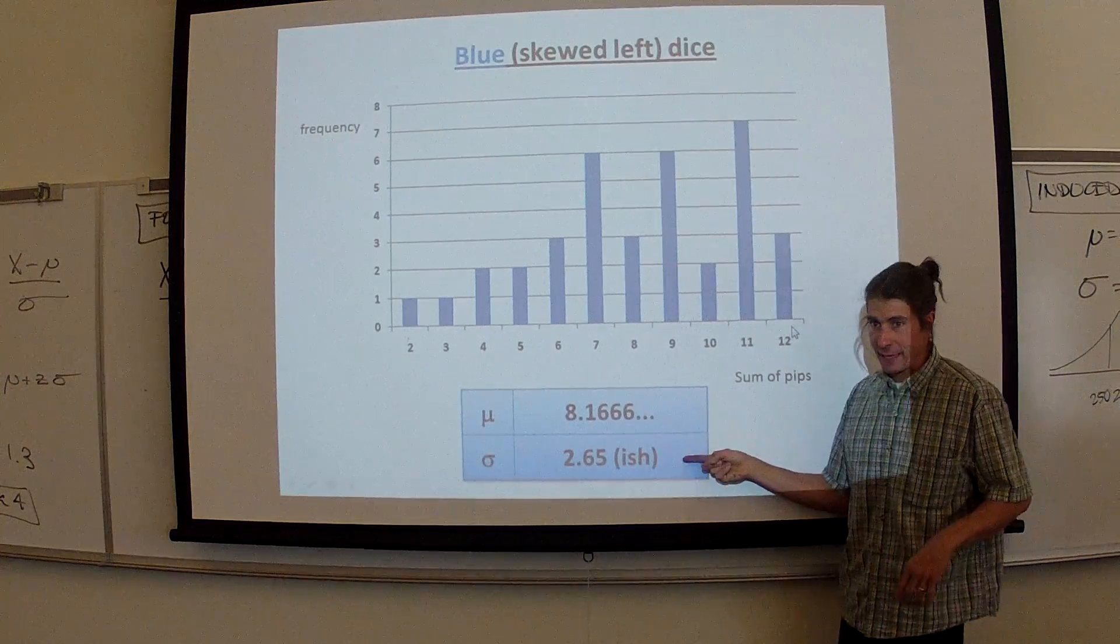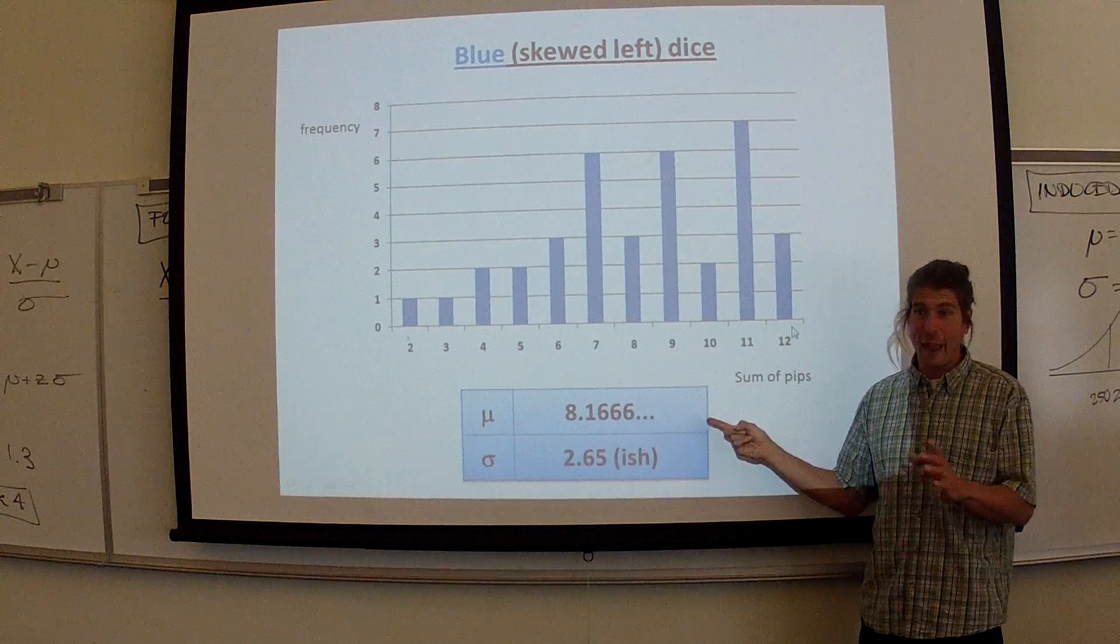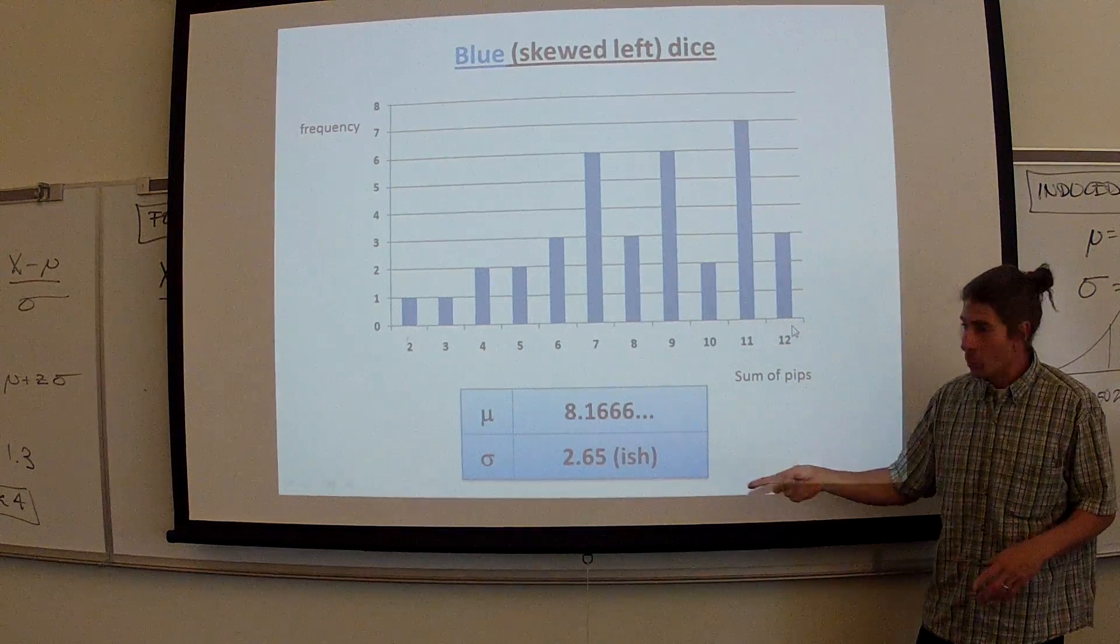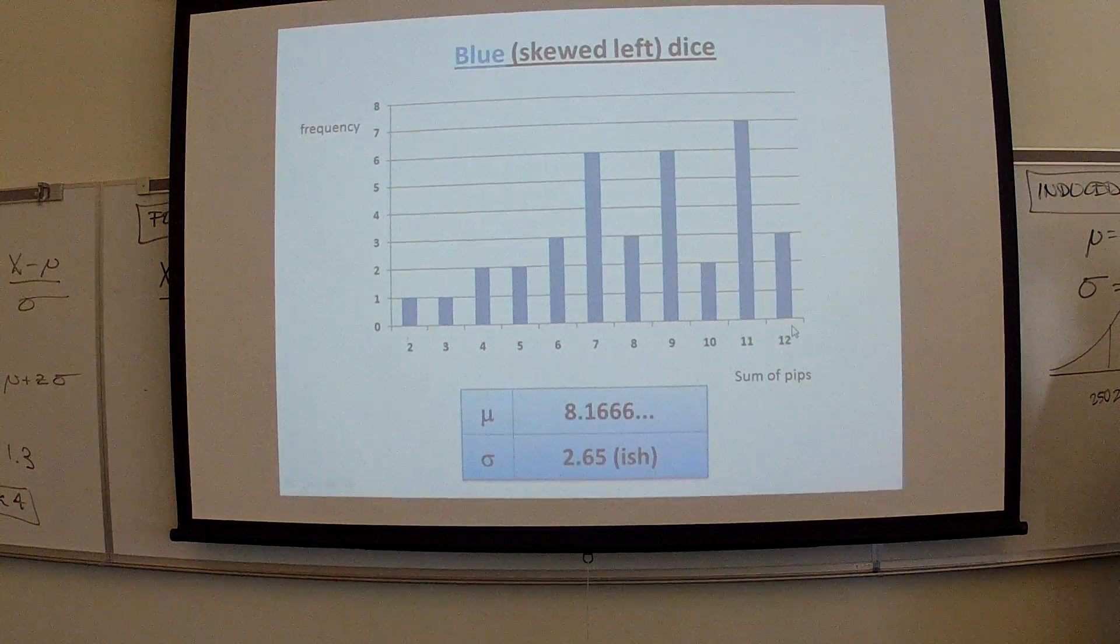And this is really the key right here. We want to know the average. The average of this is about 8.2 with a plus or minus about 2.65. Those are the blue dice, the blue dice and their numbers.